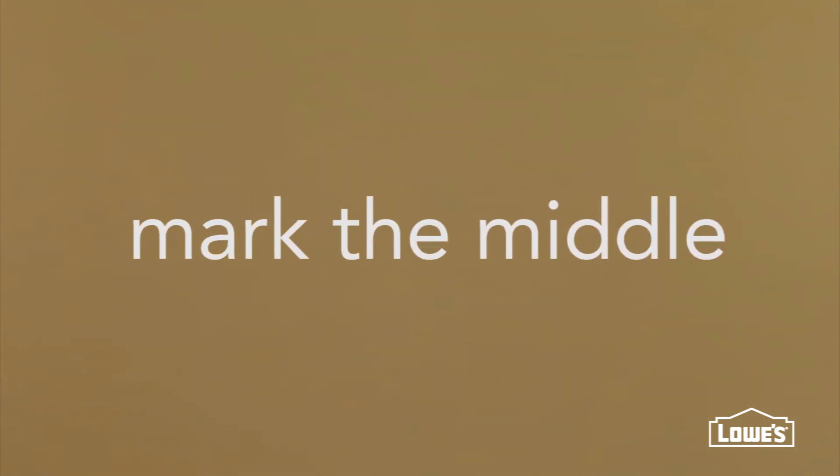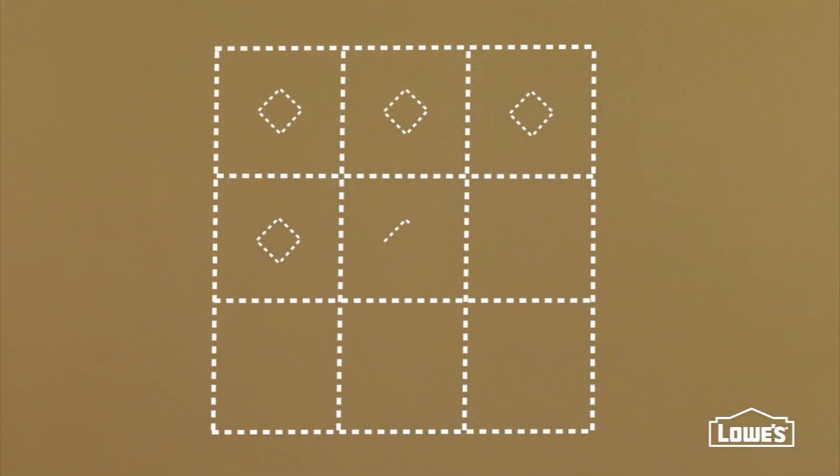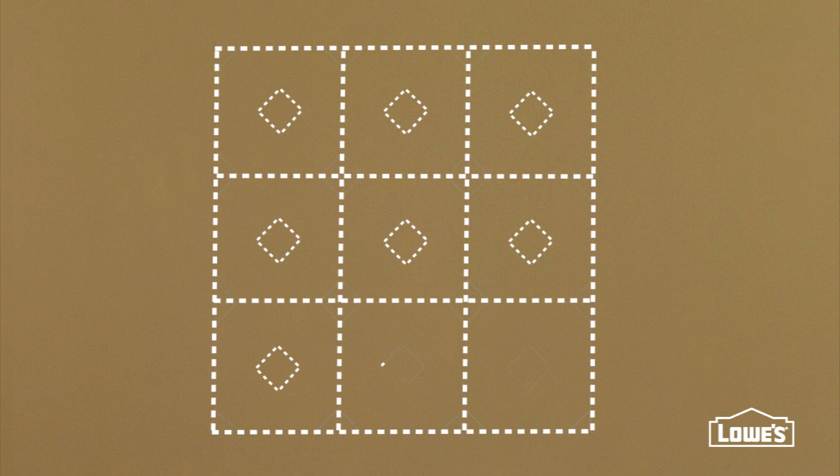Cut a 9 inch square of foam core and then cut a diamond shape from the middle. Use this as a template to mark a diamond in the middle of each of your squares in the grid. Next, use the template to add diamonds at the intersections of the squares.